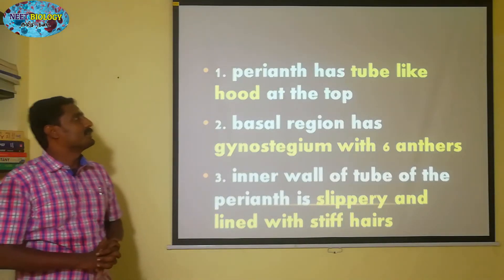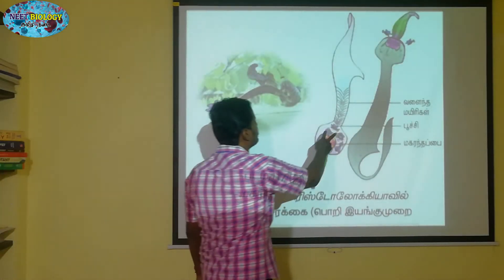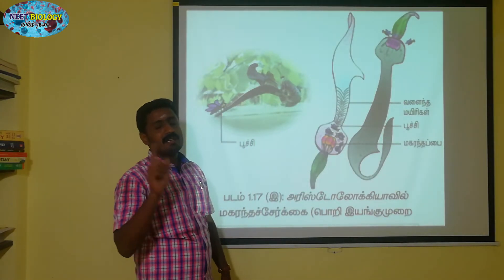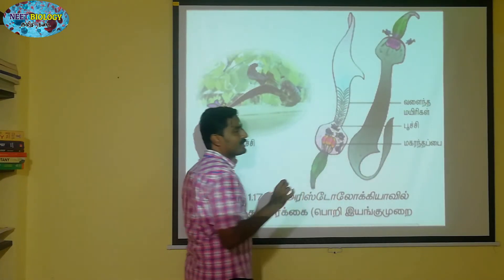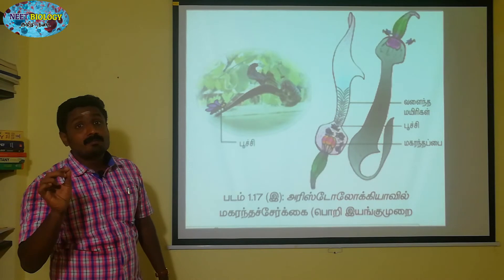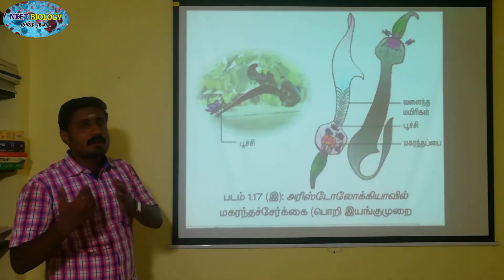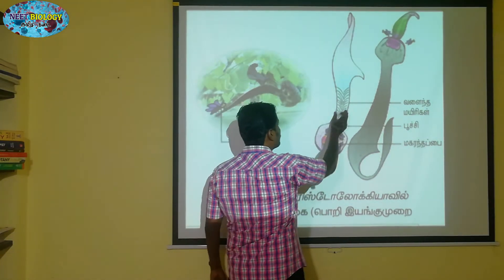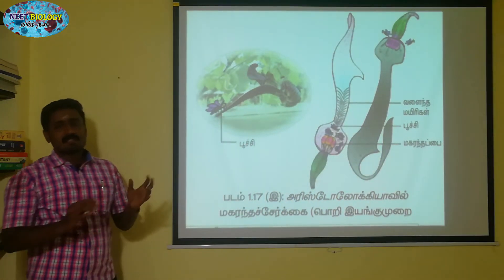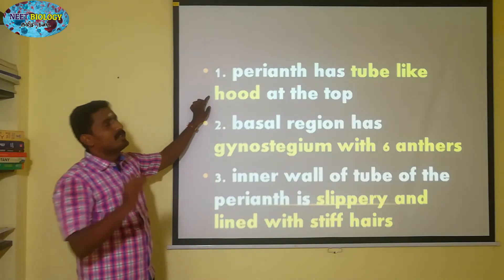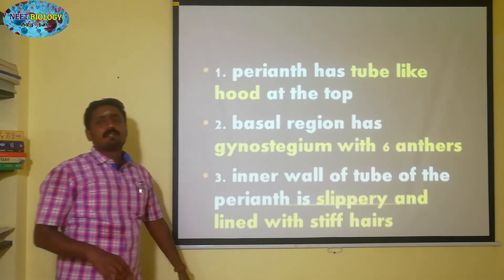First of all, the Perianth has a tube like a hood at the top. In the tubular structure, this is called Calyx Corolla. The Perianth is here. Perianth has a tube like a hood at the top, and in the top region there is a hood.